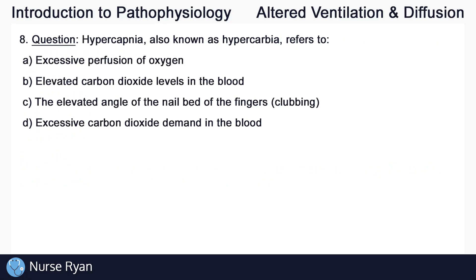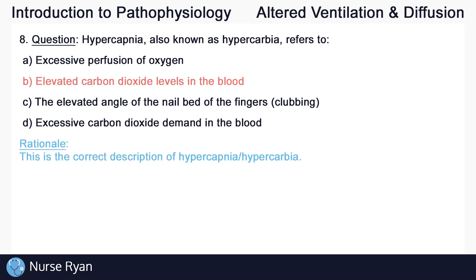And for the last question of this quiz, number eight. Hypercapnia, also known as hypercarbia, refers to — this one is B: elevated carbon dioxide levels in the blood. This is the correct description of hypercapnia or hypercarbia. And that's it for our altered ventilation and diffusion quiz.